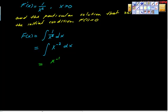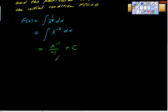This is going to be x to the negative 1 over negative 1, plus the constant C. Keep in mind this C value tells us there can be a constant value here — there are a bunch of parallel functions that satisfy this. What the particular solution does is clarify the exact value of C. Cleaning it up gives us negative 1 over x plus C.